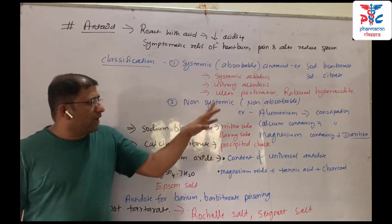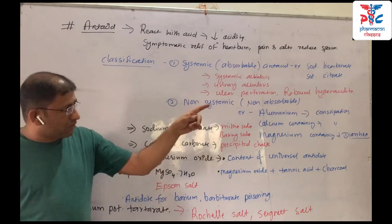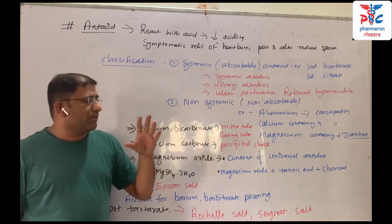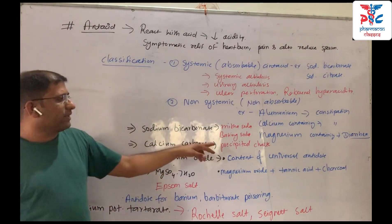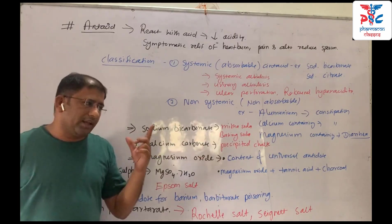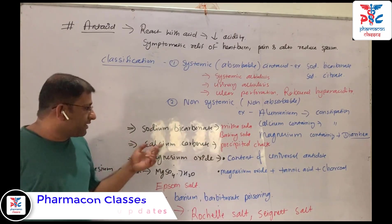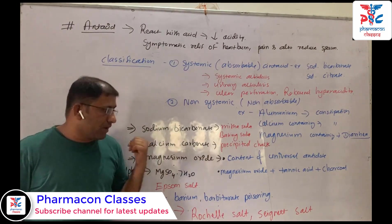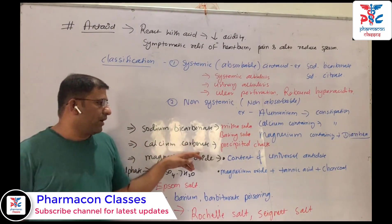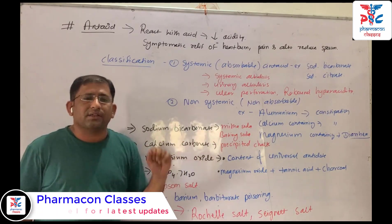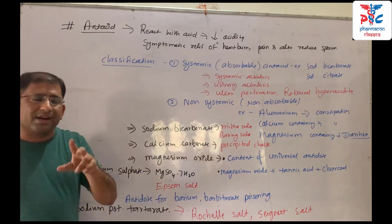For non-systemic antacids: aluminum-containing and calcium-containing both cause constipation, and magnesium-containing causes diarrhea. Calcium carbonate and calcium hydroxide are examples of non-systemic antacids. Calcium carbonate is known as calcite, and calcium hydroxide is a tetanolide type.